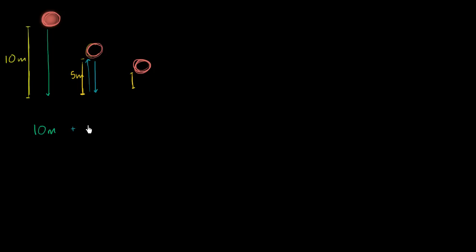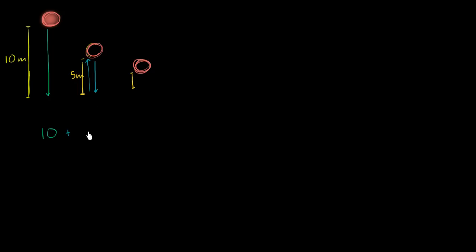So it's going to go 2 times 10 times one half. Each of these is going to be 10 meters. So the first drop, it goes straight down 10 meters. Then on the next bounce, it's going to go up 10 times one half, and then down 10 times one half. Notice, we just care about the total vertical distance — we don't care about the direction. So it's going to go up 10 times one half, up 5 meters, and then down 5 meters, traveling a total of 10 meters for that bounce — 5 up and 5 down. And on the next bounce, it's going to go half as far, so it's going to go 10 times one half squared up, and then 10 times one half squared down.